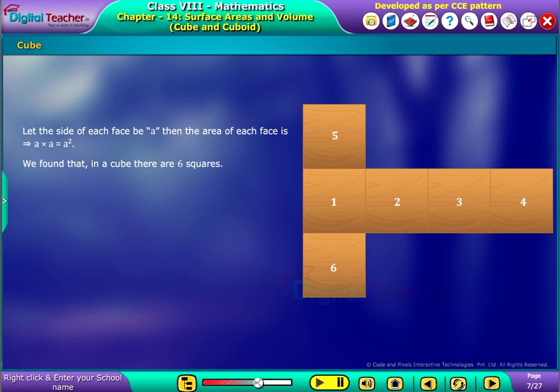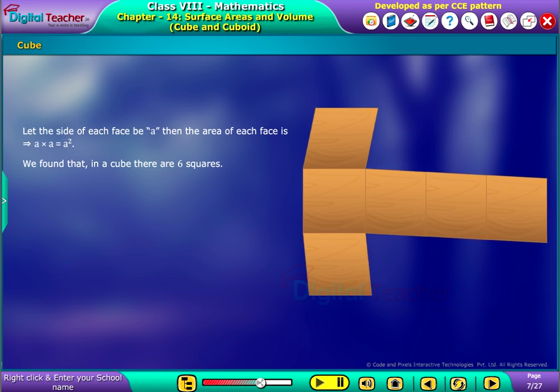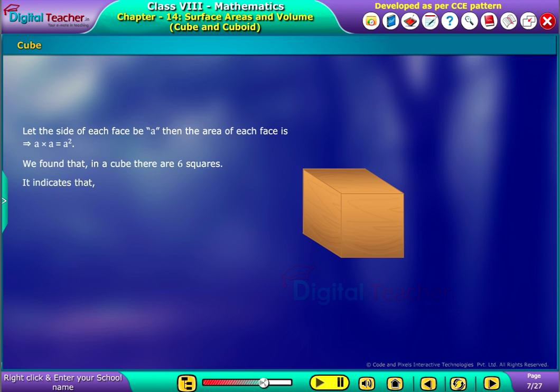We found that in a cube, there are 6 squares. It indicates that, the total surface area of a cube is equal to 6A square.